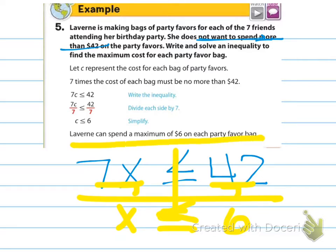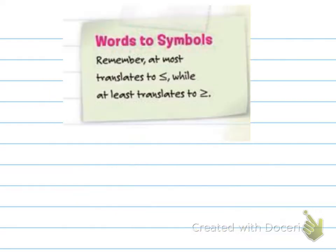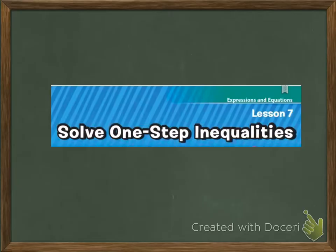Remember that 'at most' translates to less than or equal to, and 'at least' translates to greater than or equal to — use examples and plug in numbers to make sure it makes sense. That's the end of 8.7, Solve One-Step Inequalities. We'll see you in school.